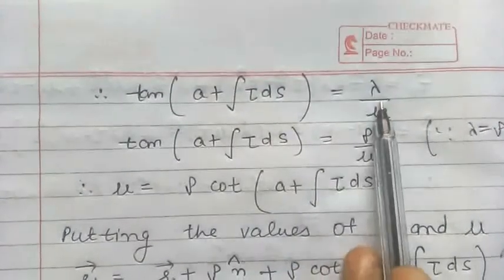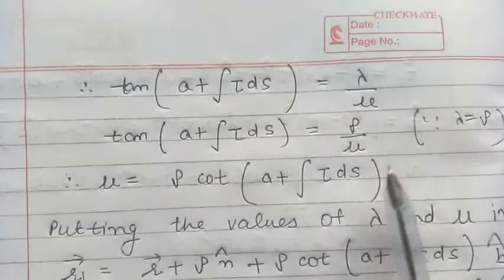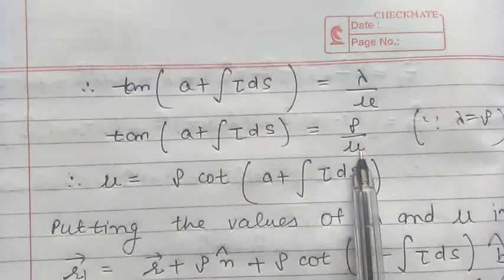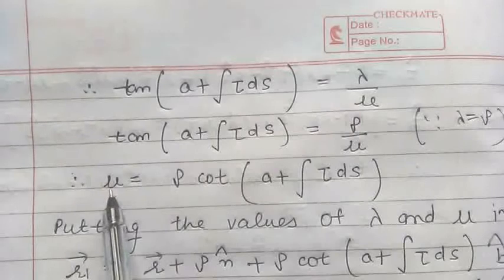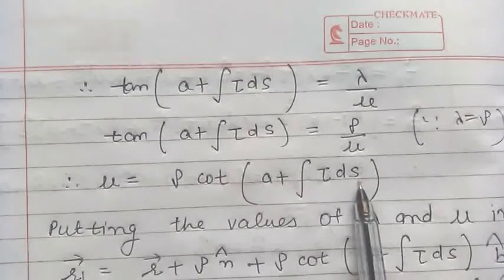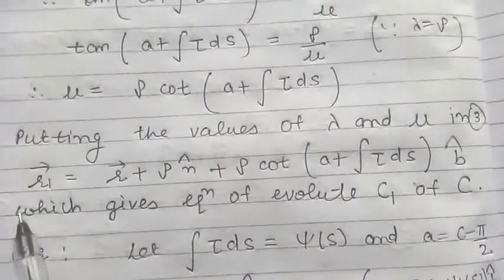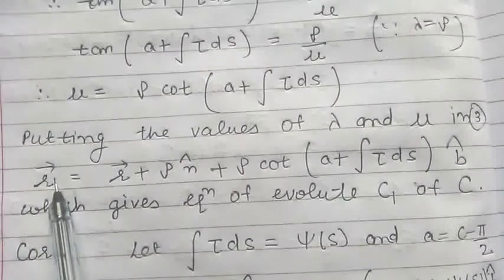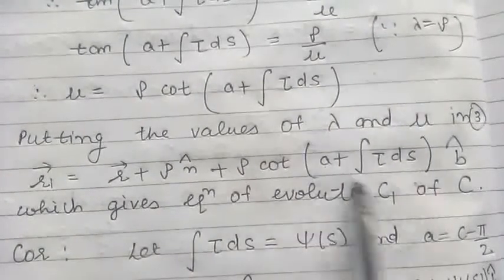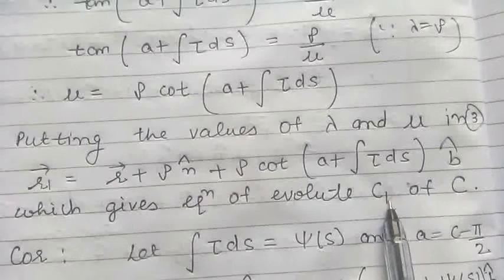From here we can write: tan(A plus ∫τ dS) equals λ/μ. Since λ equals ρ, substituting this expression gives ρ/μ, and from here μ equals ρ cot(A plus ∫τ dS). Now we have obtained the values of both λ and μ, so we can substitute these values in the equation of evolute. We get vector R1 equal to vector R plus ρ N cap plus ρ cot(A plus ∫τ dS) into B cap. This gives us the equation of evolute C1 for the curve C.